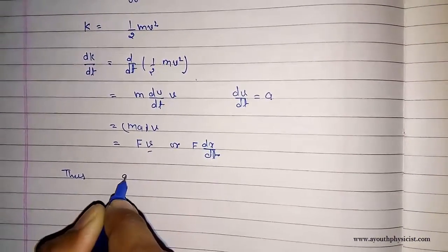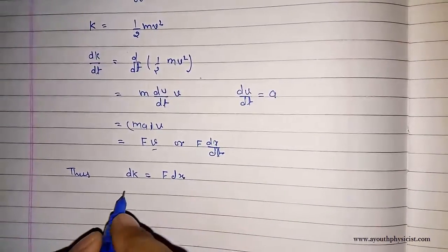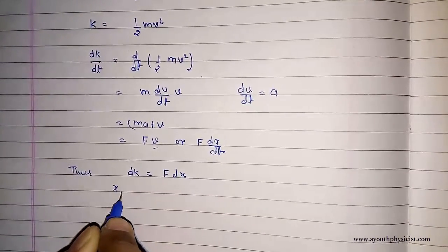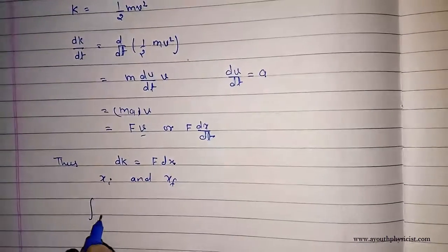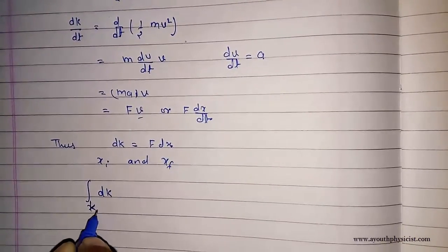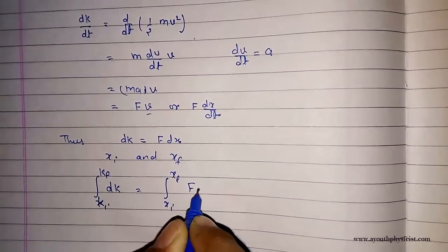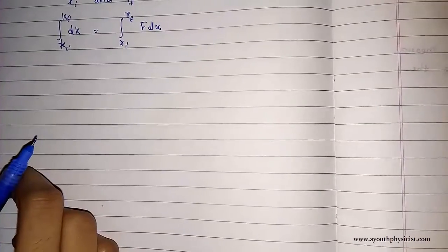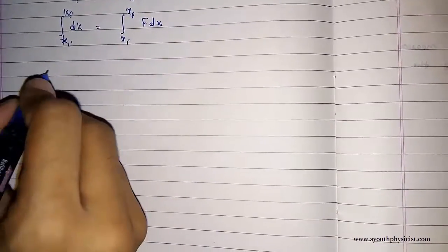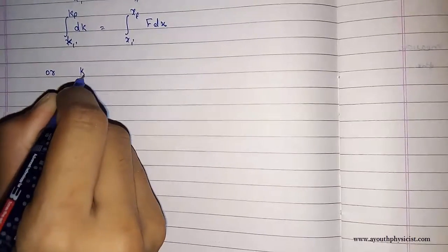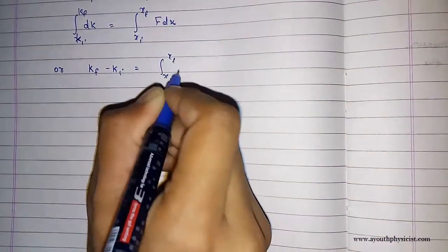Thus dk is equal to f dx. Integrating this from the initial position xi to the final position xf: integrating dk from ki to kf, and integrating f dx from xi to xf. Where ki and kf are the initial and final kinetic energies corresponding to xi and xf. Thus we can write that kf minus ki equals the integral from xi to xf of f dx.